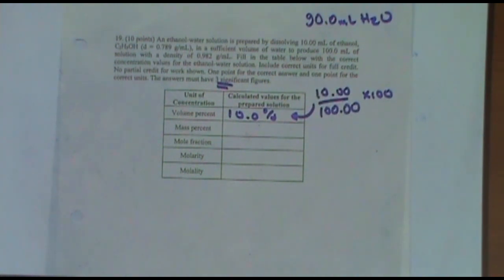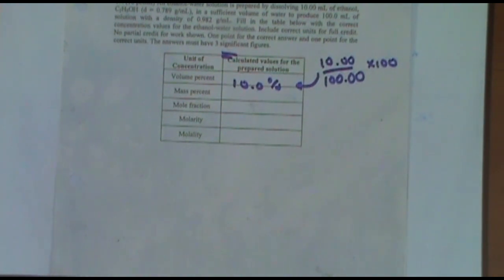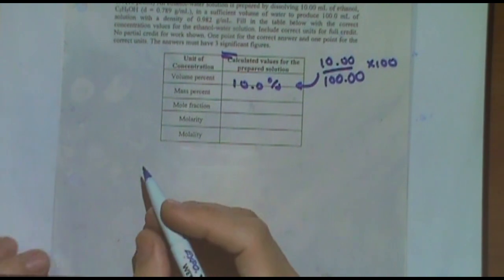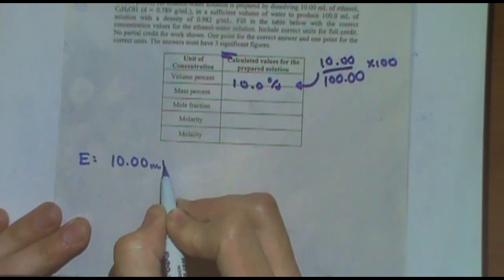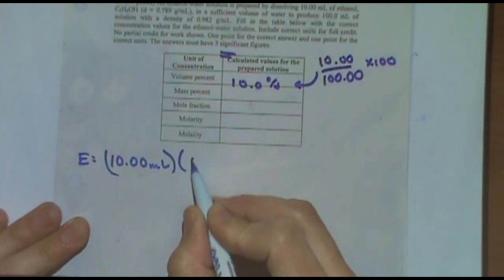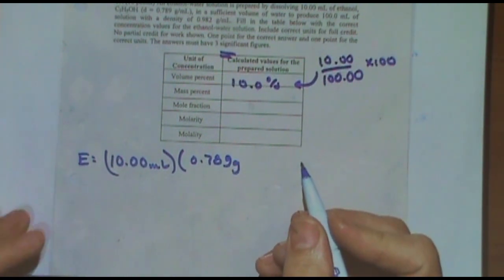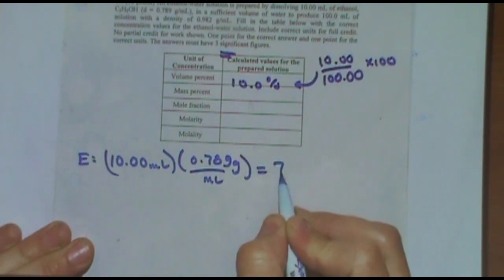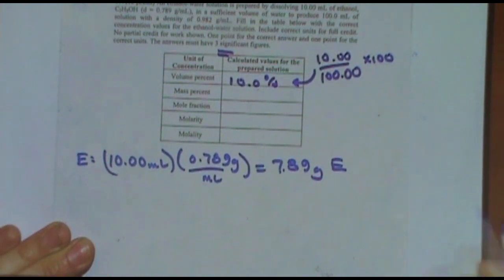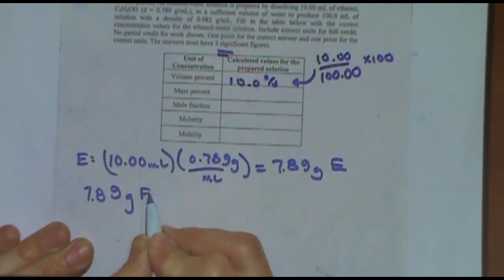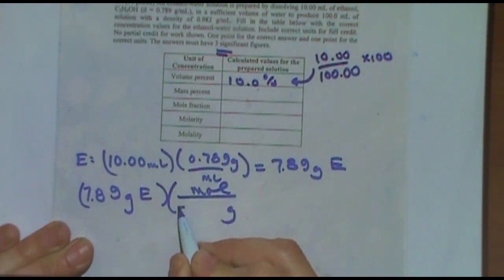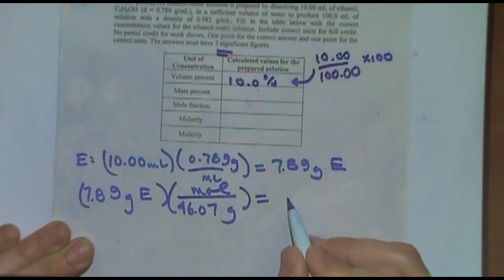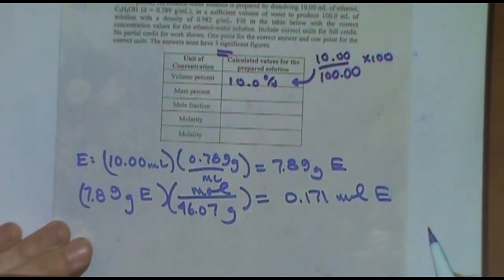Next. The other ones are a little bit more difficult, so we actually have to do a bit of math: mass percent, mole fraction, molarity, molality. For all of those, I'm going to want the mass and moles of everything. So let's do ethanol first. Ethanol — I have 10 milliliters. I can use the density, 0.789 grams per milliliter, and I get 7.89 grams of ethanol. I can take that 7.89 grams of ethanol and use its molar mass. Notice the formulas given at the top. The molar mass of ethanol is 46.07 from the periodic table. I got 0.171 moles of ethanol.